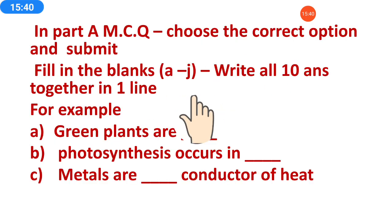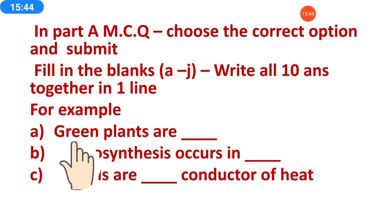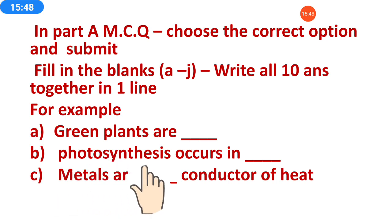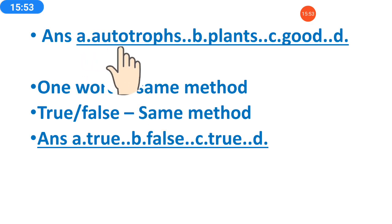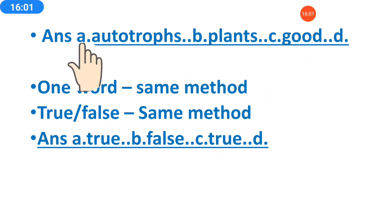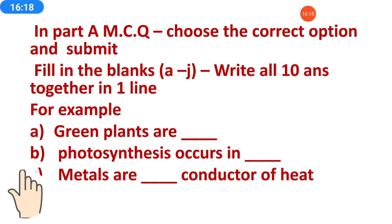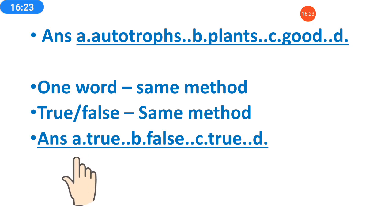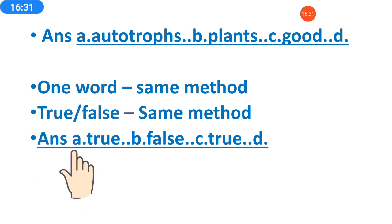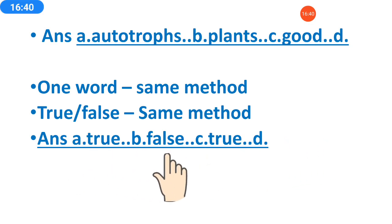For one word questions, the same method applies. Suppose one word questions are there: A answer, then two dots, B answer, then two dots, C answer — in this way for one word also. For true-false, same method. All 5 true-false will be shown together. In the given space, how you will write: A true, then two dots, B false, then two dots, C true — in this manner write all true-false answers in one line only.